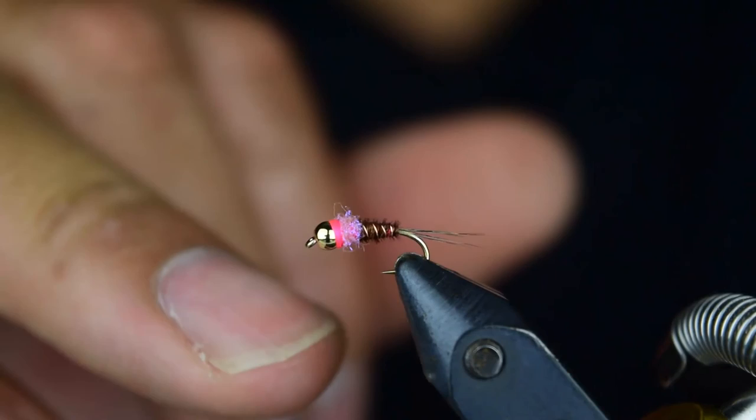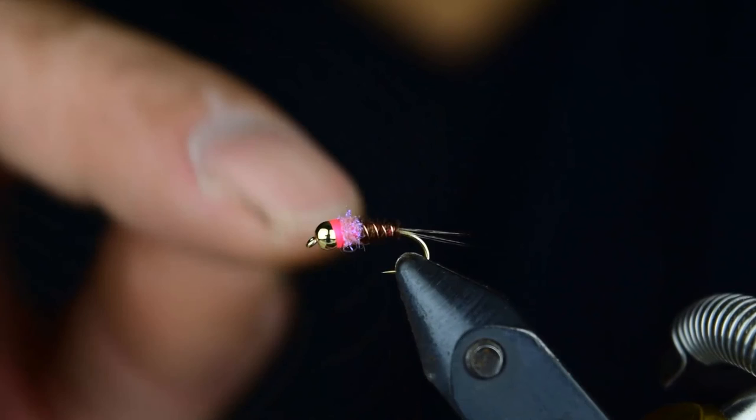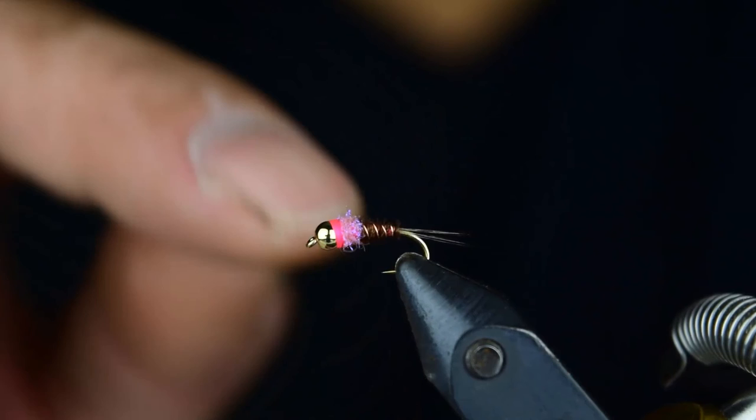So pull one of these out, use it as an attractor fly with your other nymphs or your other midges during the winter time, and you'll catch a ton of fish with this fly. It's a great pattern to use, we use it all the time.